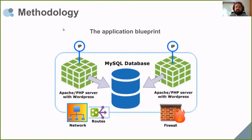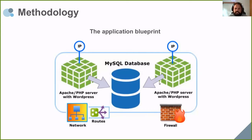Let's talk about the methodology of the experiment. We used a very common application in the market: a WordPress application. We created an application blueprint. This blueprint is composed of three instances. Here you can see one instance configured with Apache, PHP, and WordPress.